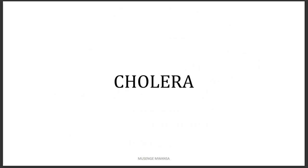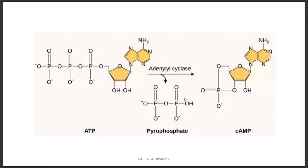Now let's discuss cholera. Cholera is caused by Vibrio cholerae, which produces a toxin that activates the enzyme adenyl cyclase. Adenyl cyclase converts ATP to cyclic AMP — cyclic adenosine monophosphate — removing two phosphate groups and releasing pyrophosphate as a byproduct. This monophosphate attaches at position 5 and also at position 3 of the pentose sugar, forming the cyclic structure.